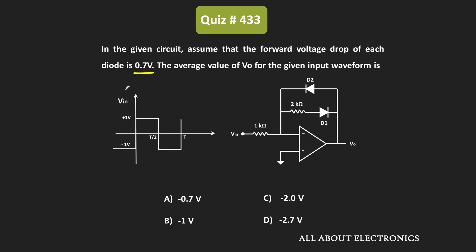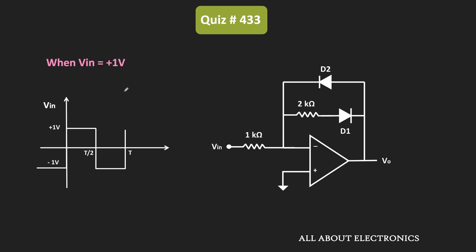To find this average value, first let us find the output waveform for the given circuit. For that, let us see how the circuit behaves during the positive half cycle. We should know which diode is conducting and which diode is off.